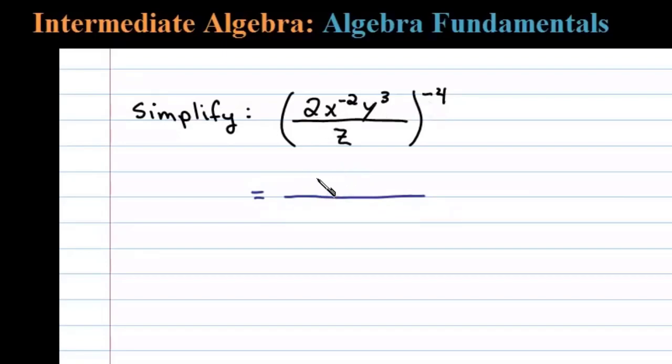In this case we have 2 to the negative fourth power, x to the negative 2 times negative 4 which is positive 8 power, and then y to the negative 12th power. Finally we have z to the negative 4th power in the denominator.